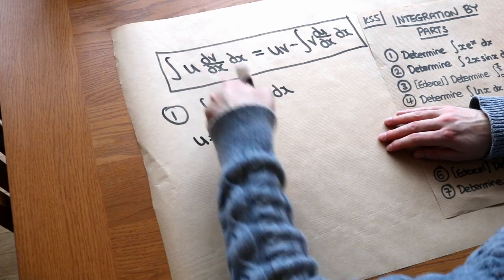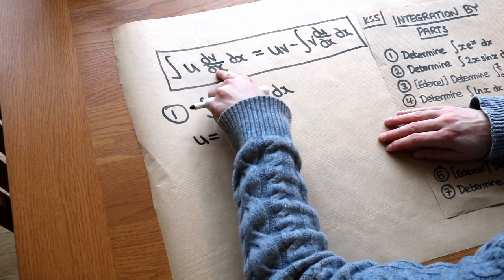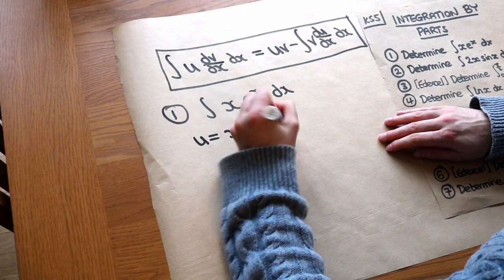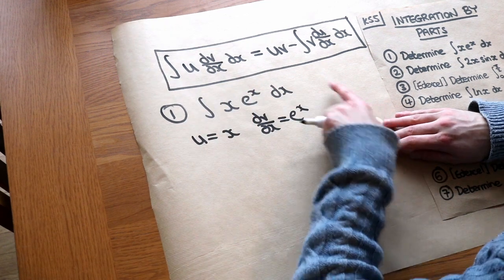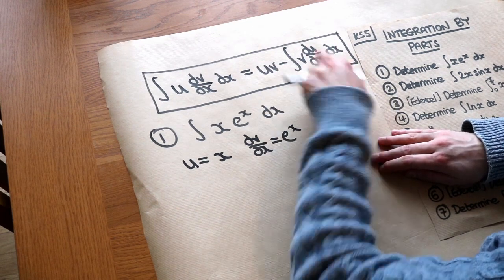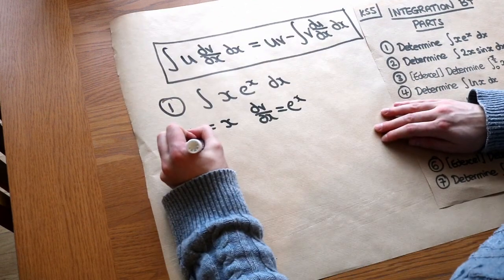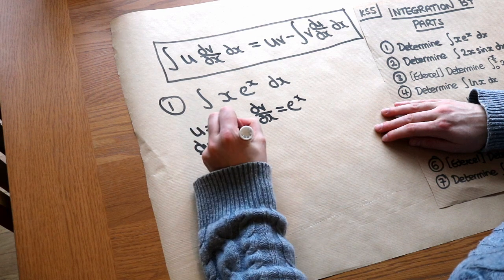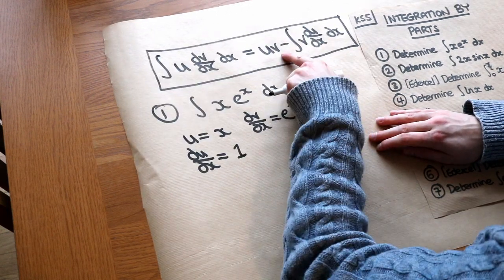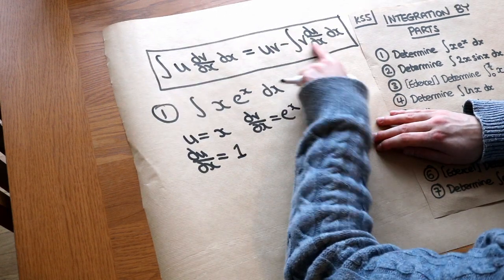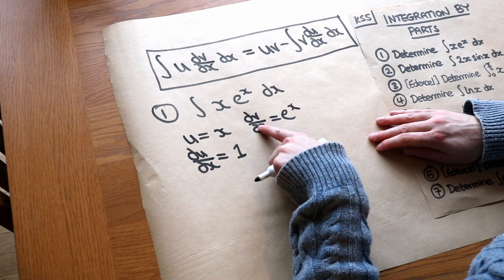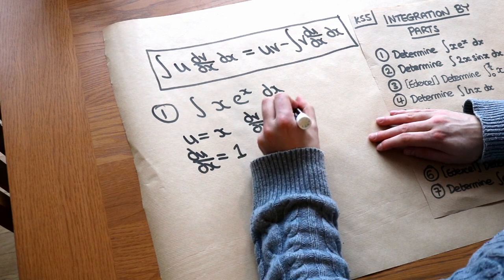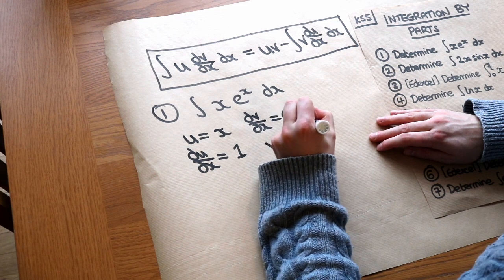So we set u = x and dv/dx = eˣ. In this expression we need du/dx, so differentiating x we get just 1. We're also going to need v, so we integrate dv/dx to get v. And eˣ just integrates to eˣ.